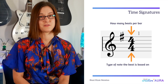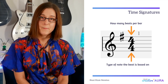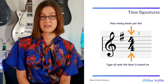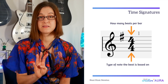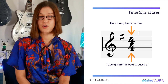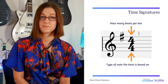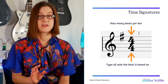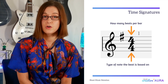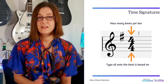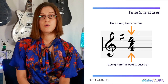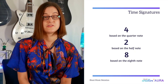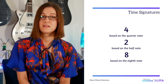The bottom number represents the type of note that beat is based on. Our example is the most common time signature used, which is 4/4 — meaning each bar has 4 beats based on the quarter note. The number on top can vary, so we could have three beats per bar — one, two, three — which would be a waltz. Or you could have five beats per bar and so on. We also have two more common bottom numbers: two, based on the half note, and eight, based on the eighth note. Common time signatures using these are 2/2 and 6/8.